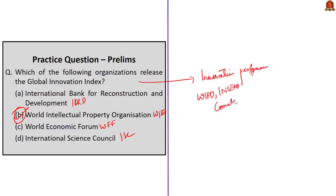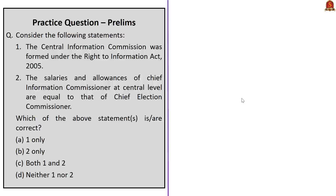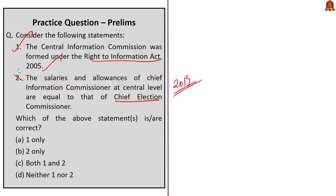Next question: Statement 1 — The Central Information Commission was set up under the Right to Information Act of 2005. This is correct. Statement 2 — The salaries and allowances of the Chief Information Commissioner at central level are equal to that of the Chief Election Commissioner. This statement was correct before the amendment of 2019; after the 2019 amendment, salaries, allowances and terms of service of the CIC will be determined by the Union Government. So Statement 2 is incorrect, and the correct answer is option A: one only.